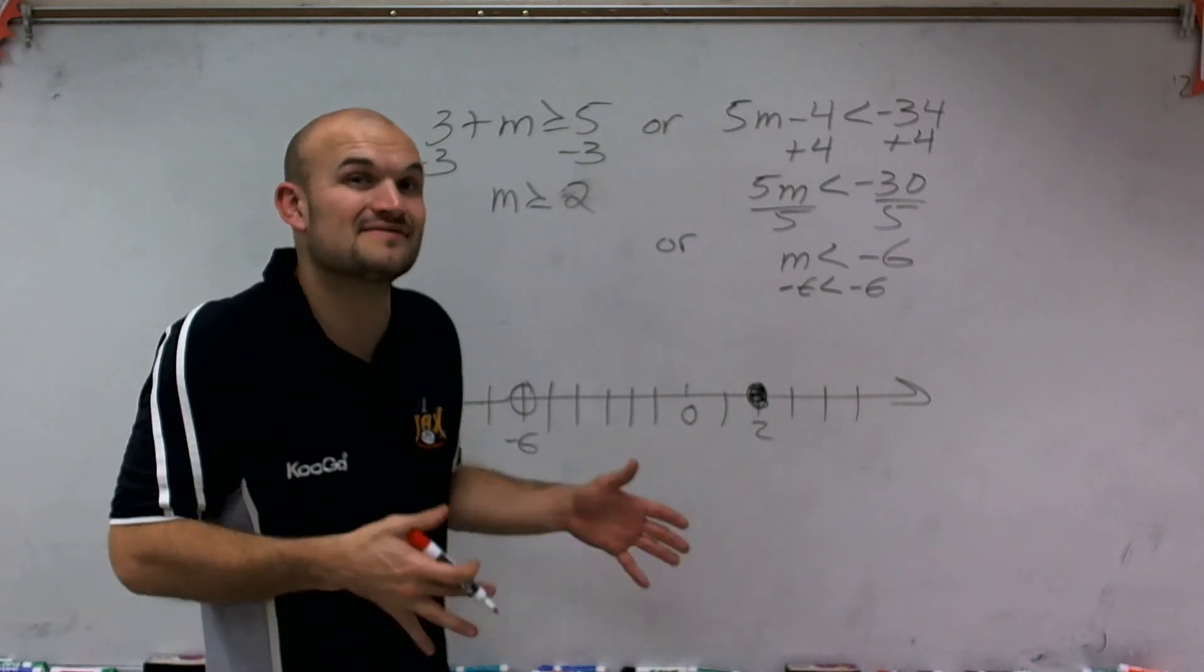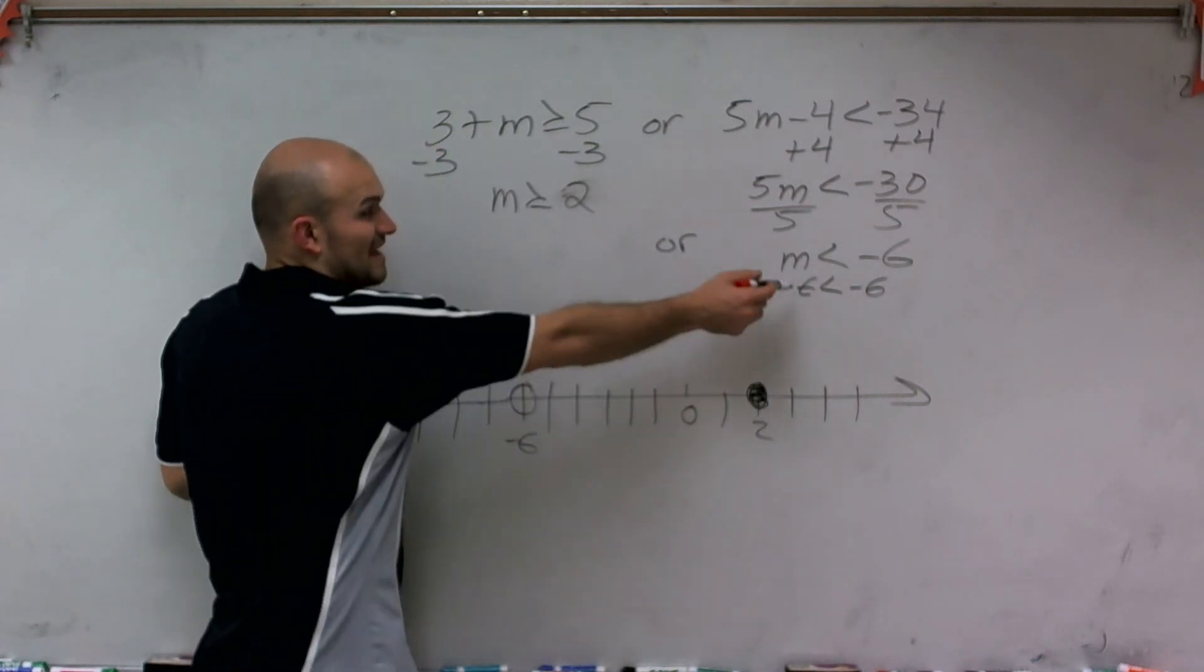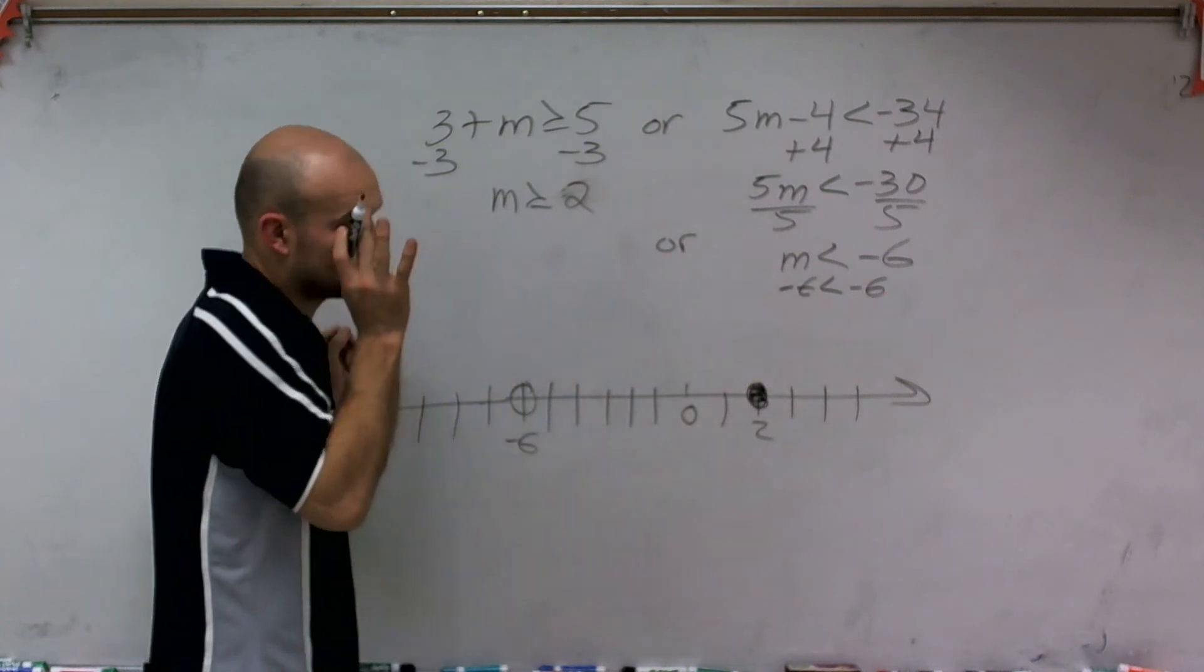Negative 6 is not less than negative 6. Negative 6 is equal to negative 6. So therefore, since negative 6 is not evaluated for that function, we're going to leave it as an open circle.